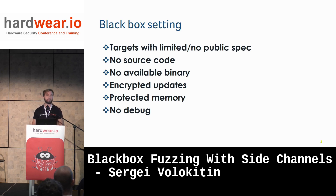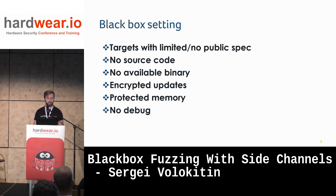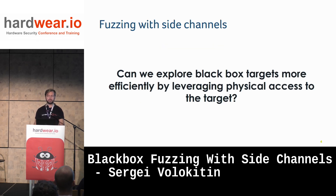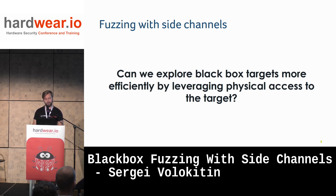But what if we are in a black box setting? We have some device and we really want to understand how it works. We probably don't have any specs, documentation, or knowledge of the product design. We don't have the source code or the binary. OTA updates are probed, memory is protected and possibly encrypted — nothing really helps. The product end view is a black box. So can we use fuzzing to explore the target even though we have it in our hands? That's one of the things we tried to leverage — we have the device, we can connect equipment to it, and try to understand what it does based on the side channels it leaves.